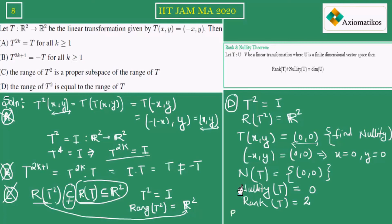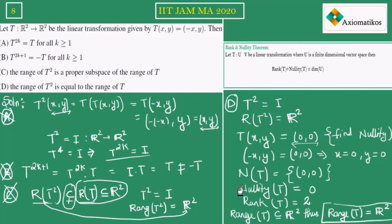We know range of T is a subset of R². Since it has dimension 2, we can conclude that range of T is actually R². So range of T² equals R² and range of T equals R² — from these two results, we can finally conclude that range of T² is equal to range of T.